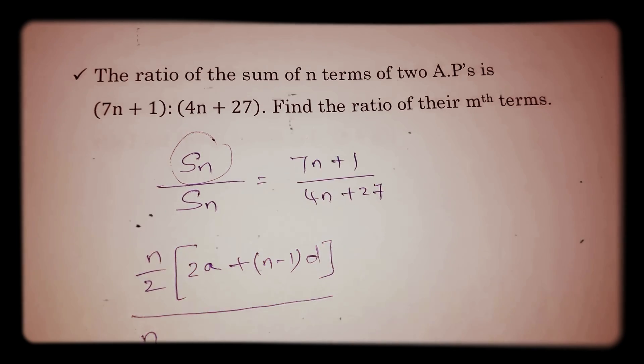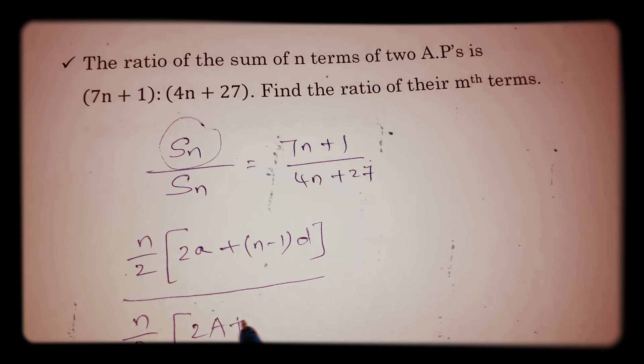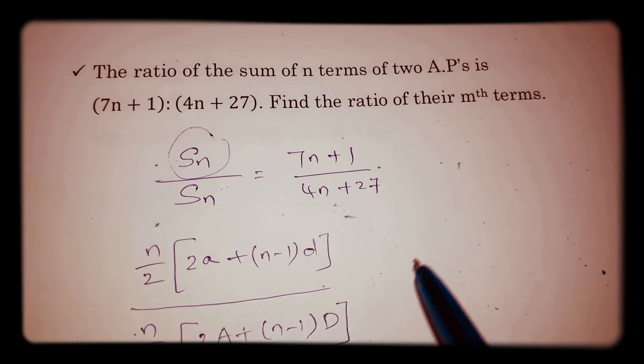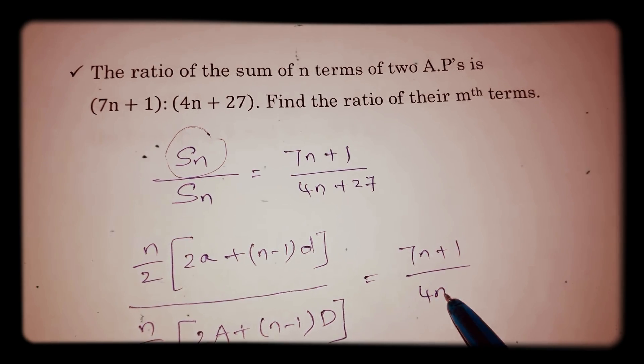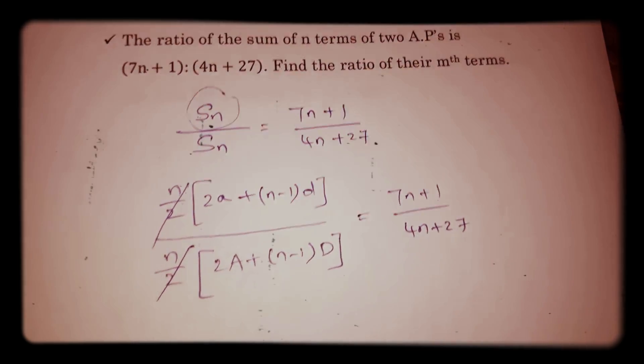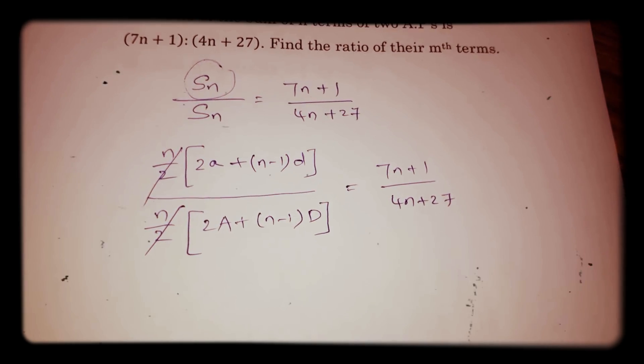But take the first term as capital A and (n-1) into common difference take it as capital D. This equals (7n+1) by (4n+27). The two will get cancelled, n/2, n/2.